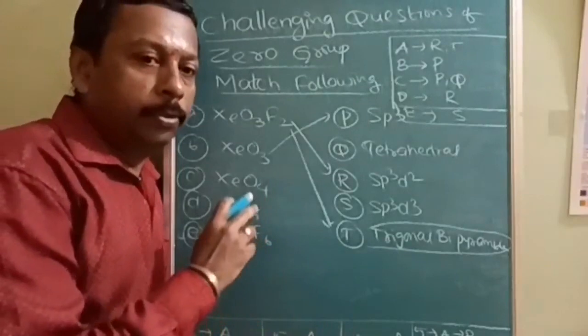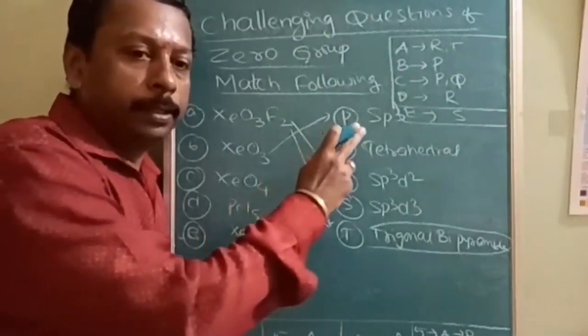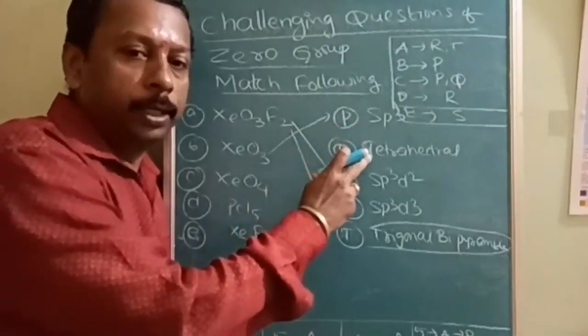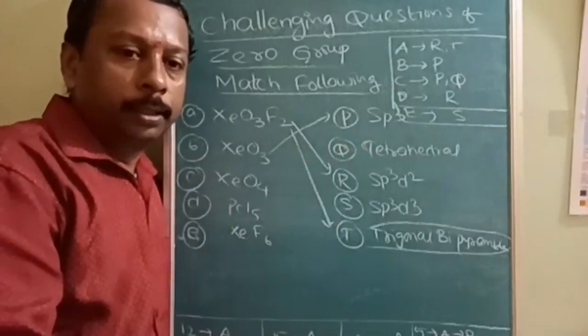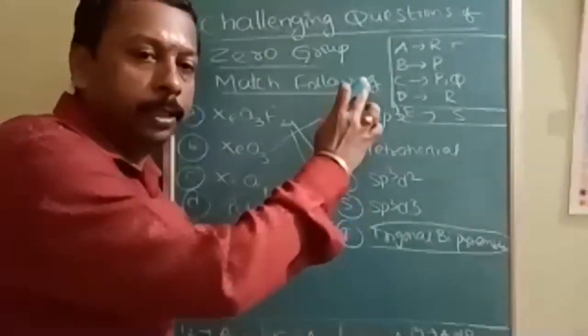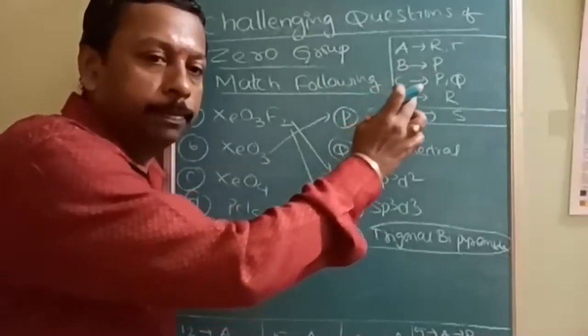It may be due to presence of lone pair, it is SP3 only, not tetrahedral. So like that everything is matched. What is the answer? A is R and T, B is only P, C is P comma Q, D is R and E is S.